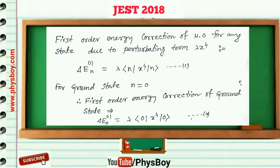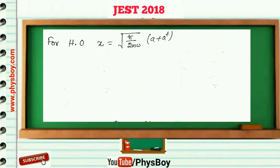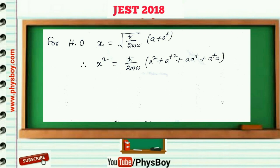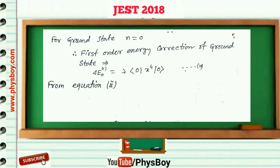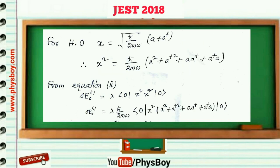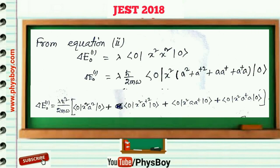For the harmonic oscillator the position operator can be written in terms of creation and annihilation operators. Taking the square of both sides we get x squared equal to h-bar over 2m-omega times (a squared plus a-dagger squared plus a·a-dagger plus a-dagger·a). From equation 2 we split x to the power 4 into two parts, then inserting x squared from this expression we obtain the expanded equation.